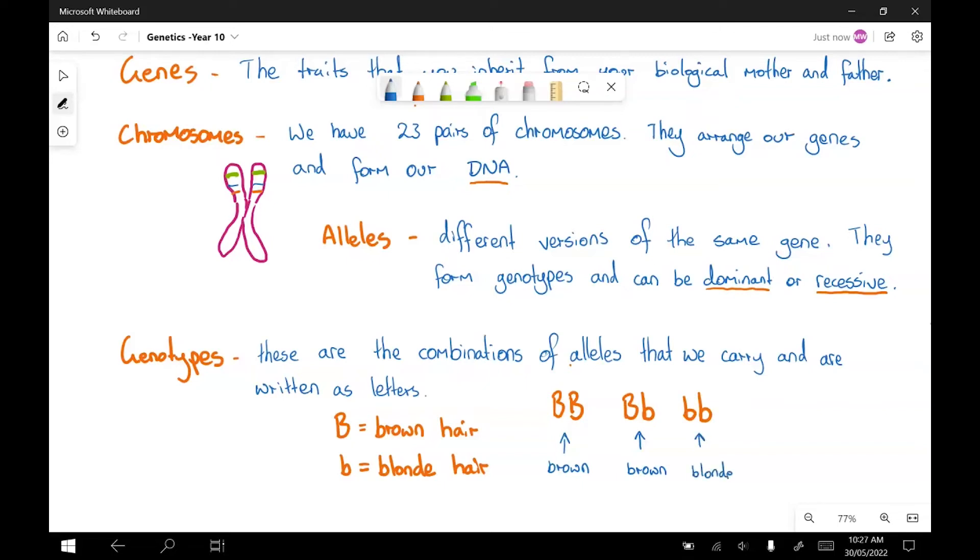But we also have to talk about these genotypes as being either homozygous or heterozygous. So if we have a look at these two here, these two are homozygous. So homozygous genotypes occur when you've got the same letter - two capital B's or two small b's. But if you get one of each, you've got a heterozygous genotype. So in other words, you've got one of each.